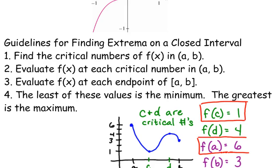Evaluate the critical numbers: 1 and 4. Evaluate the endpoints: 6 and 3. And then we pick out which one's the greatest and which one's the least. So obviously the least is 1, so C is where the minimum occurs. That's the absolute min on this interval. F(A) = 6 is the absolute max on this interval. If we change the interval, those answers may change.